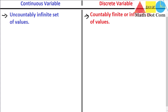It means we cannot list the values of a continuous variable because there are so many that it's hard to list them, while discrete variable values can be listed and counted — finitely or infinitely. But even if they are infinite, you can count them. We will see examples later so it will be easier to understand their difference.